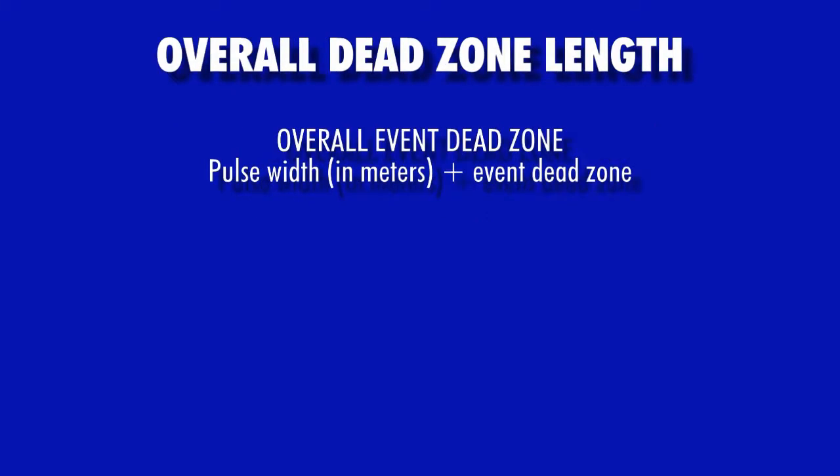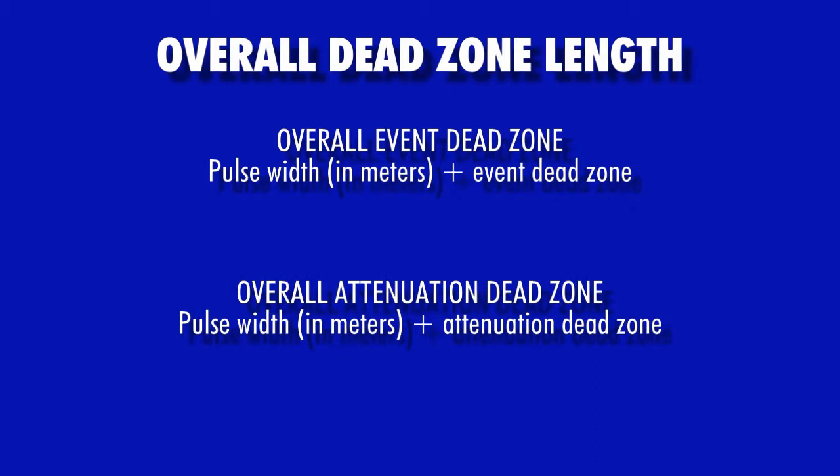Thus, the overall event dead zone for a particular OTDR test is calculated as pulse width in meters plus event dead zone in meters, while the overall attenuation dead zone for a particular OTDR test is calculated as pulse width in meters plus the attenuation dead zone in meters.